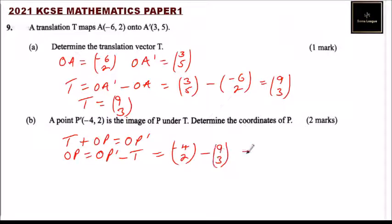So this equals -4 minus 9, that gives you -13. And the other one is -1. So P is (-13, -1). That's how you do that question.